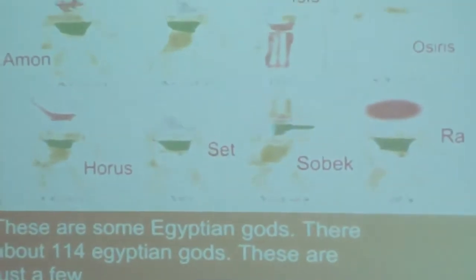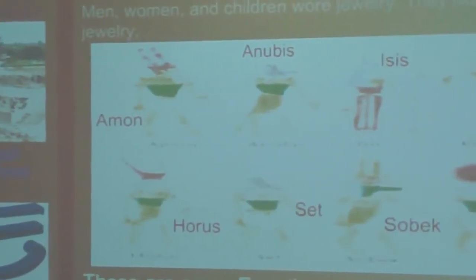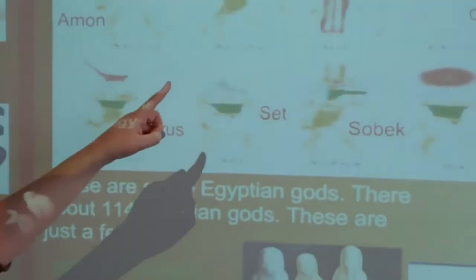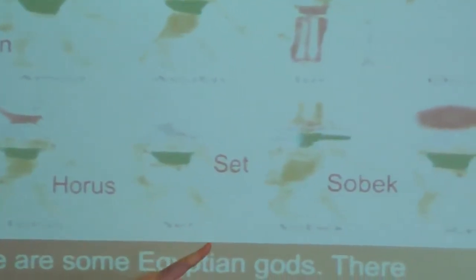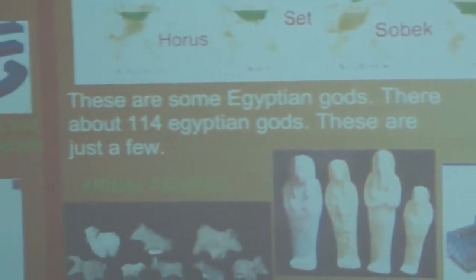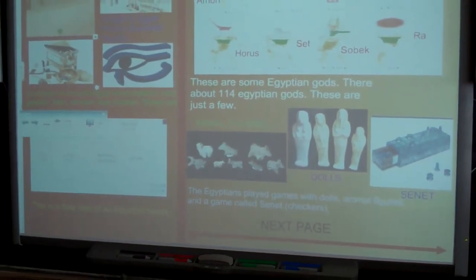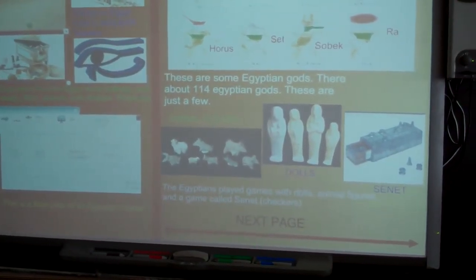These are some of the Egyptian gods. There are about 114 Egyptian gods. These are just a few: Ammon, Anubis, Isis, Osiris, Horus, Set, Sobek, and Ra. The Egyptians played games with dolls, animal figures, and a game called Senet, which is like checkers.